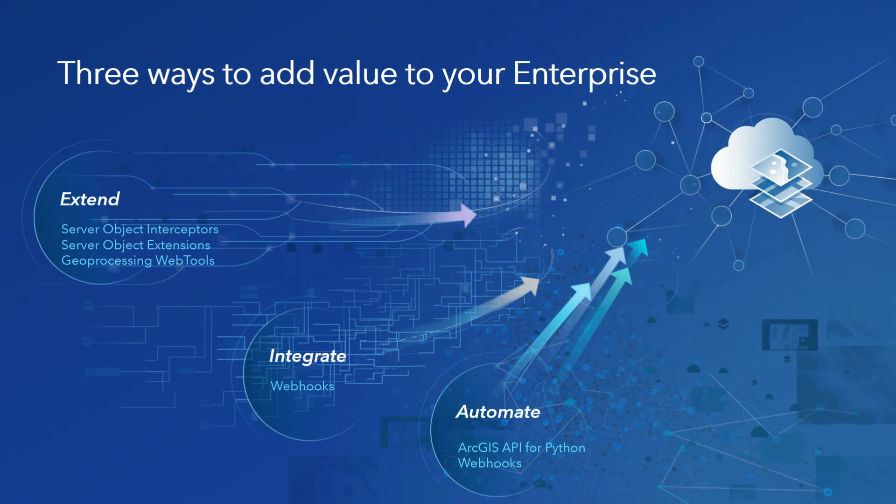Today we're going to show you three ways that you can add value to your enterprise. The first is by extending — extending using the Enterprise SDK. You can build interceptors or extensions to the server object that you get out of the box. Or you can write your own custom business logic and drop it inside a geoprocessing tool, also known as a web tool. Instantly, you get a web service, and all our clients know how to invoke calls into a geoprocessing tool and get the job done.